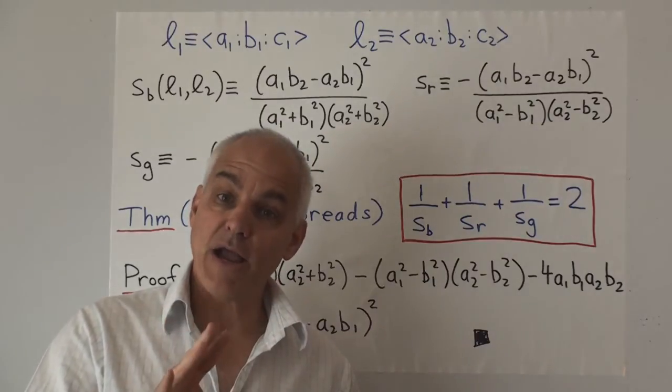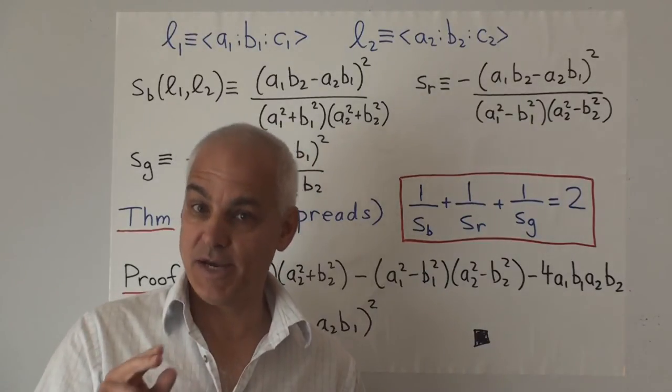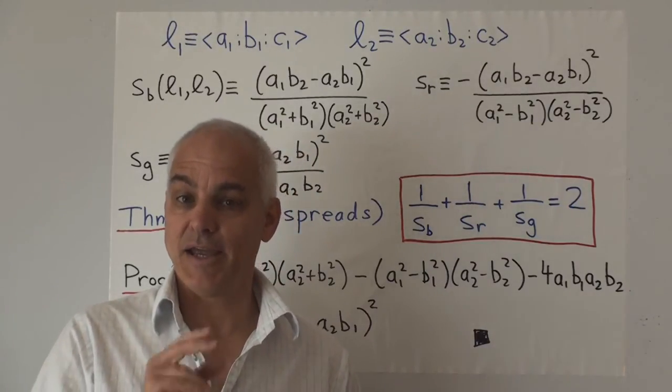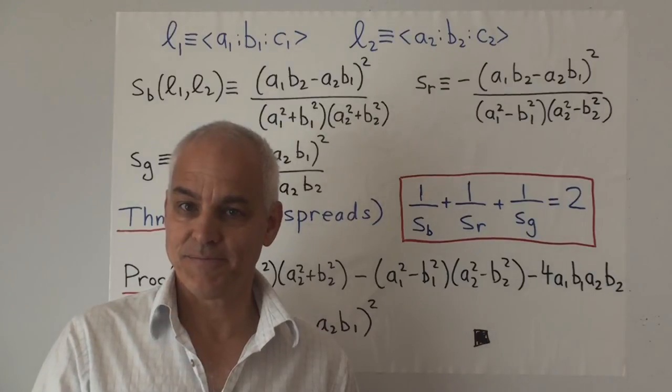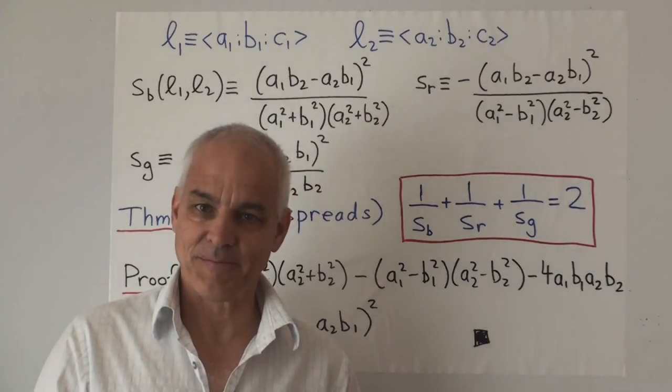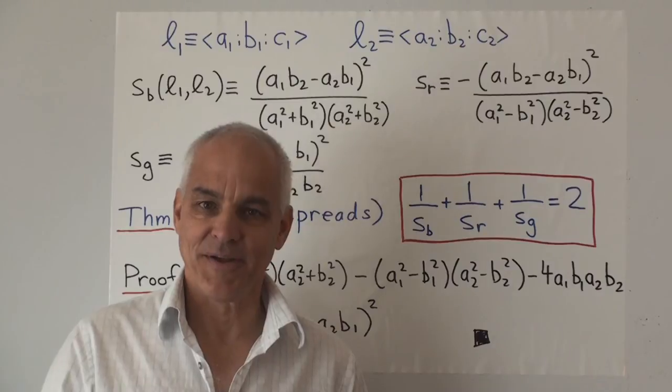Okay, next time we are going to start talking about a triangle and the Euler lines, the three different colored Euler lines in a triangle. I hope you'll join me for that. I'm Norman Wildberger. Thanks for listening.